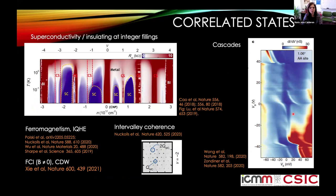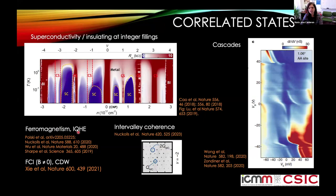Many correlated states have been observed in this system: insulating states at integer fillings of the flat bands, superconductivity at intermediate fillings, cascades and spectral weight reorganization at integer fillings, and many symmetry-broken states like intervalley coherent states, ferromagnetism, integer quantum Hall effect, fractional Chern insulators, and charge density waves. These happen at low temperatures, but we will see that other features survive up to higher temperatures.